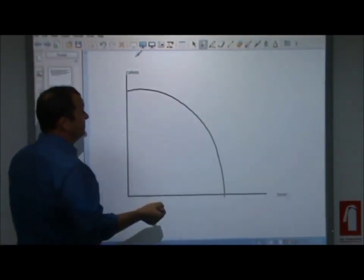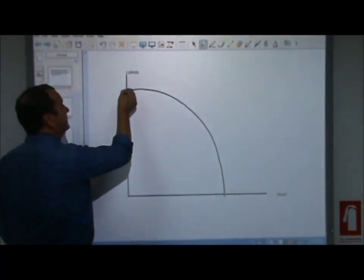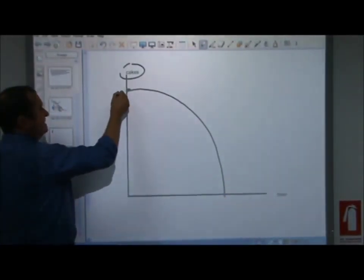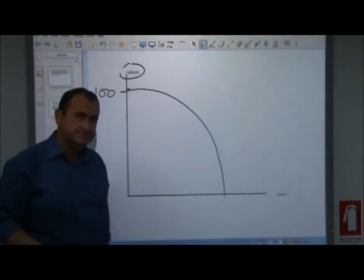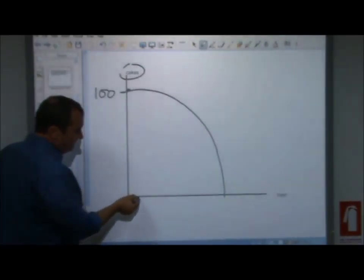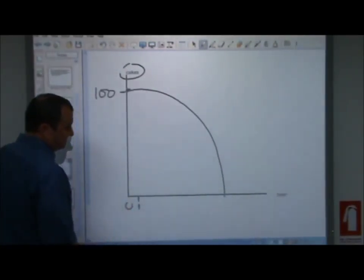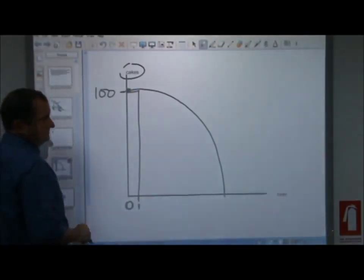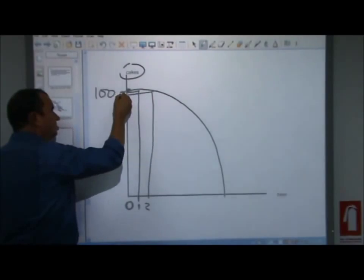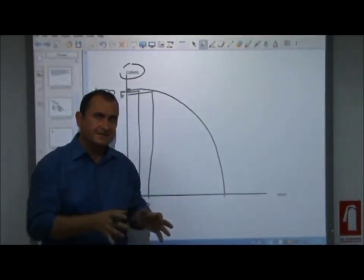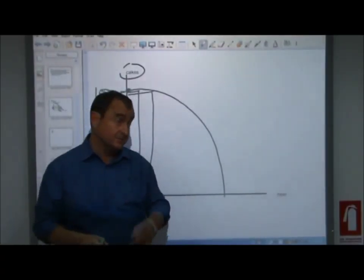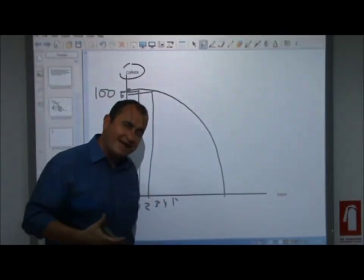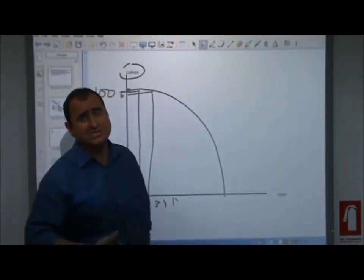Imagine that this economy is currently producing here, devoting all of its resources to cakes - not making any beer, only making cakes. Let's say it's a hundred units of cakes. They decide they want a little bit of beer and increase beer production from zero to one. Well, they're going to have to sacrifice a tiny amount of cakes. As they want more beer, they have to sacrifice some more cakes - sacrificing cakes as they divert factors of production away from cake production and into beer production.